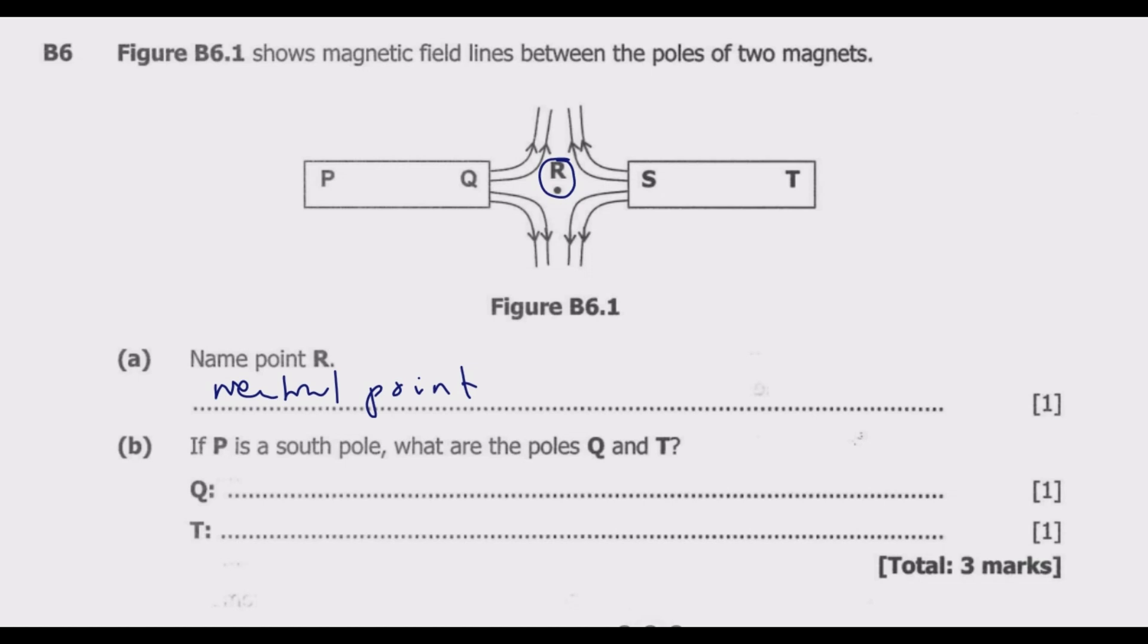What you notice in this case is these are coming out. If they are coming out, this is north and this is north. Remember the magnetic field moves from north to south. If they are entering it means they are south. If they are coming out it is north. Because they are all coming out, these are north north.